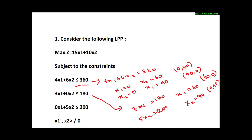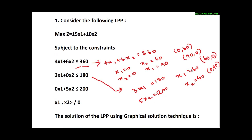Consider the following linear programming problem: max z = 15x1 + 10x2, subject to the constraints 4x1 + 6x2 ≤ 360, 3x1 + 0x2 ≤ 180, and 0x1 + 5x2 ≤ 200, with x1, x2 ≥ 0. We will solve this linear programming problem using the graphical solution method.